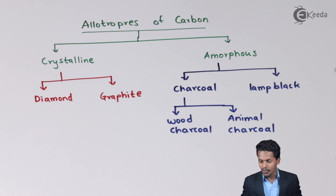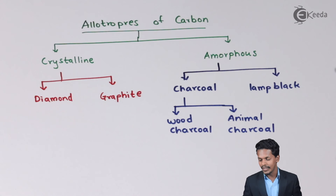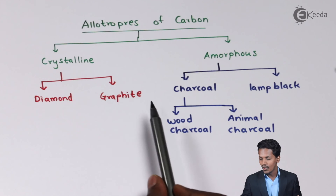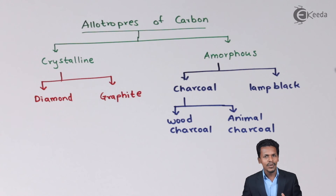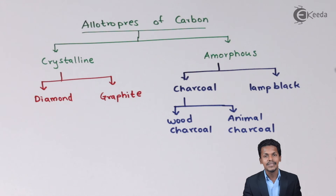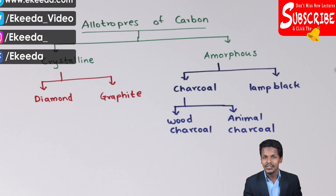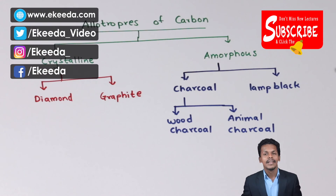In upcoming lectures, we will discuss diamond, graphite, and fullerene in detail, as fullerene is an important allotrope to cover. Thank you for watching this video. I hope you have understood what the different allotropes of carbon are. In the next lecture, we will talk about diamond, fullerene, and graphite. Please share this video with your friends and don't forget to subscribe.